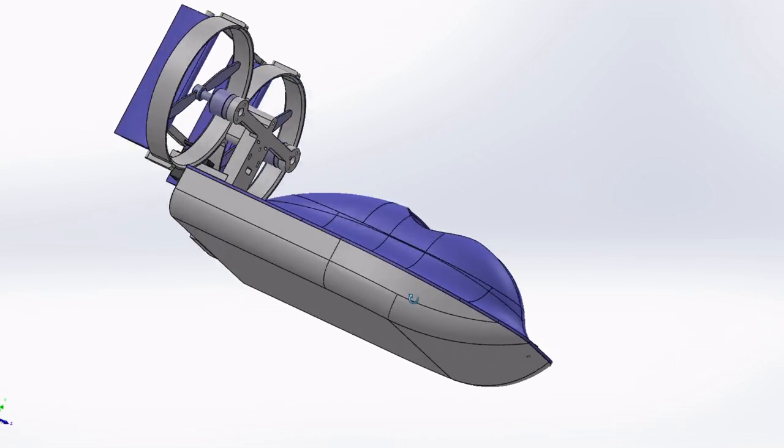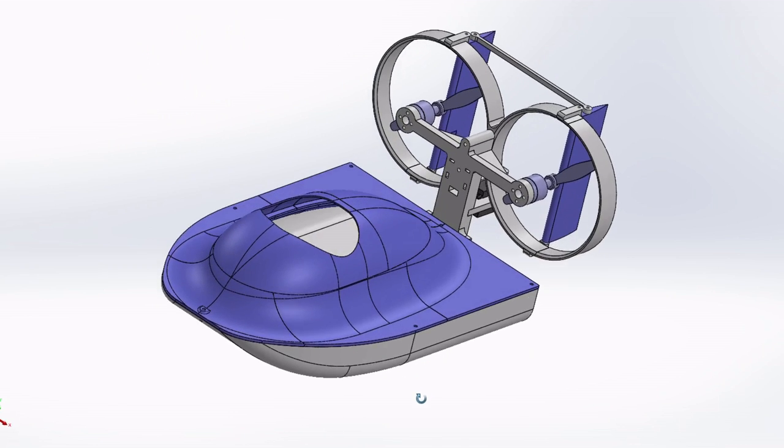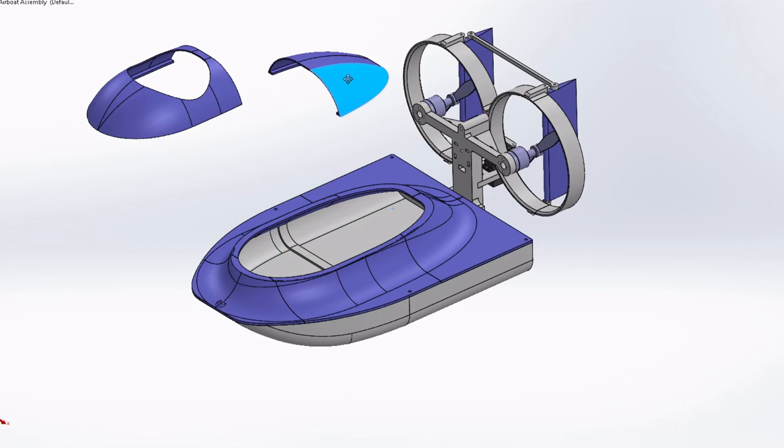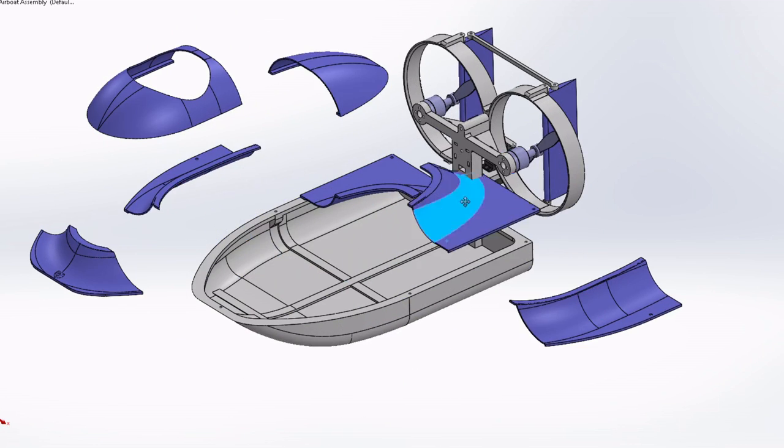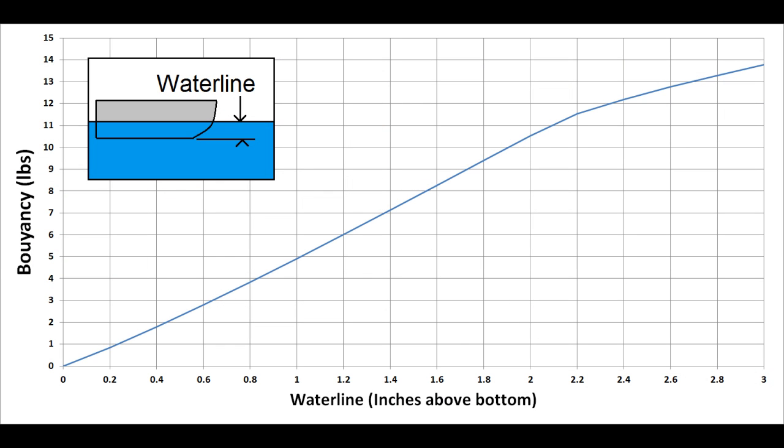So I widened the hull from 7 inches to 11 inches, added about 5 inches to the length, and reduced the taper on the front end to add to the maximum buoyancy. The motor assembly remained the same though. The new design had a maximum displacement of well over 10 pounds, so I've got a pretty safe margin for buoyancy now.